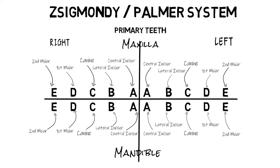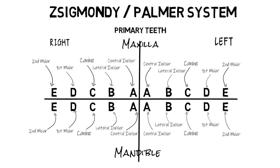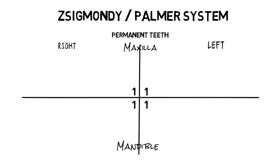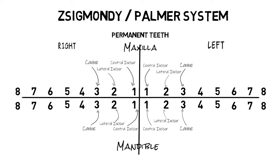First of all, we have the Palmer system. For denoting primary teeth, Palmer uses capital alphabets, where A represents a primary central incisor all the way to E which represents a primary second molar. For permanent teeth, Palmer uses numbers instead of alphabets, where 1 represents the permanent central incisor all the way to 8 which represents a permanent third molar.